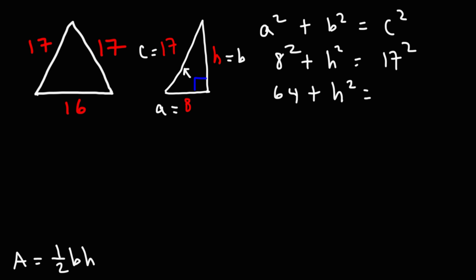17 squared. I'm going to have to use a calculator for that. 17 times 17 is 289. Now, to get h squared by itself, we need to subtract both sides by 64. And we can bring down the h squared.